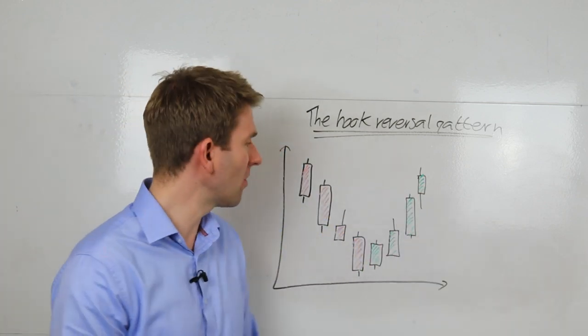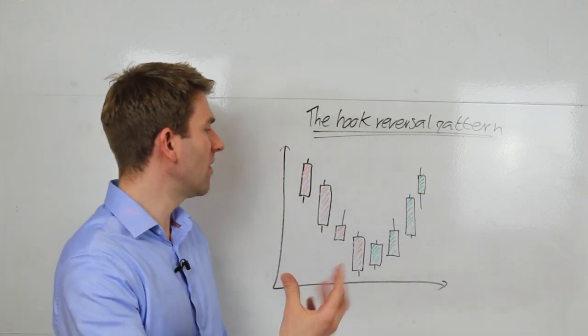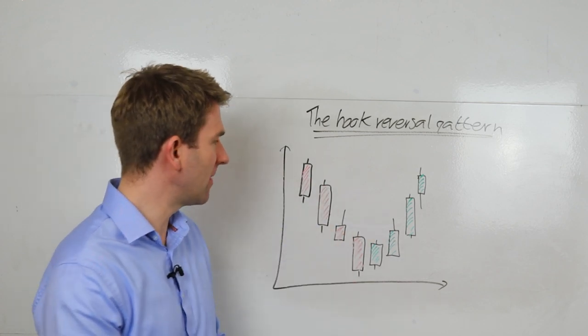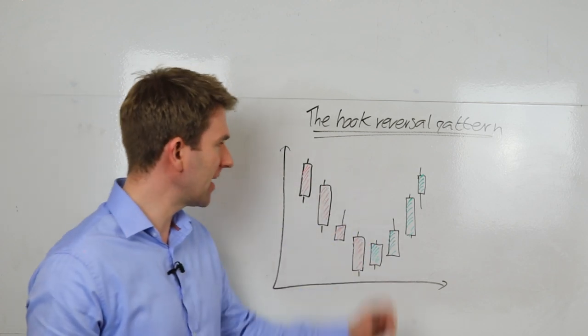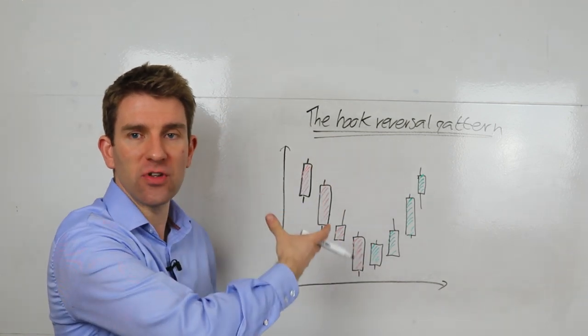All right, so hook reversal pattern. This is really the theory of it. We've got a downtrend coming in here and assume that we've got some kind of prolonged downtrend before this chart has happened.